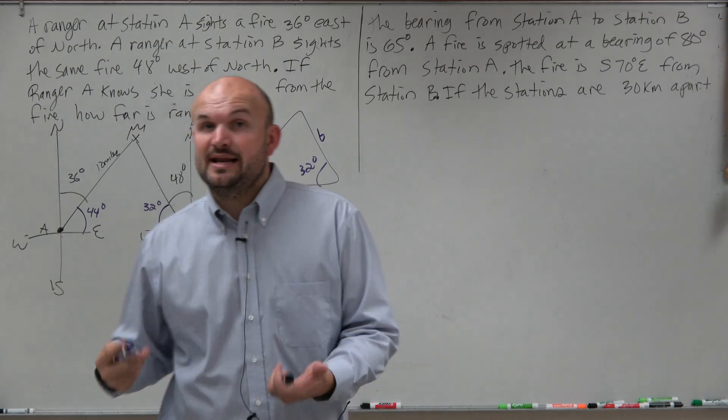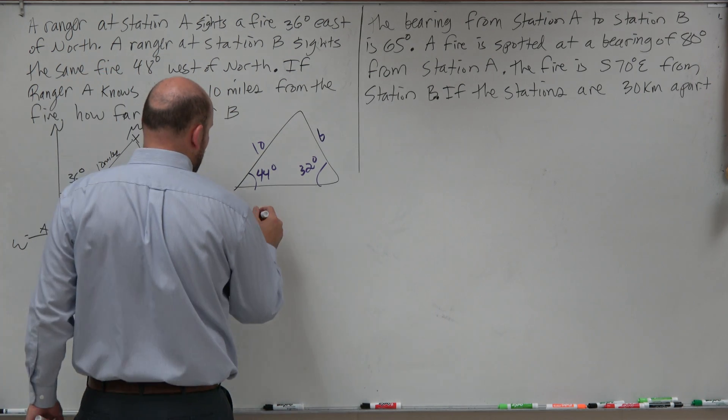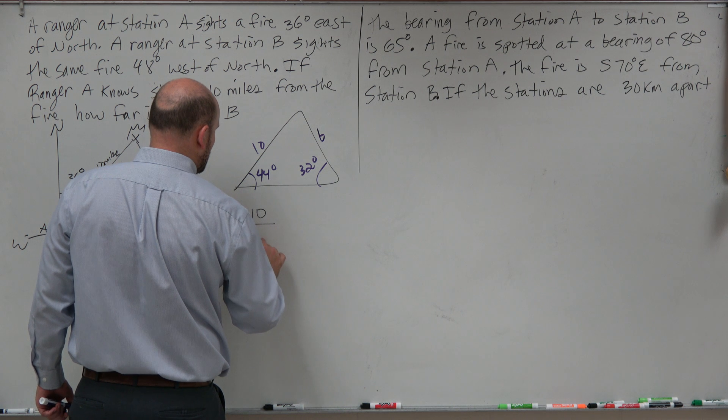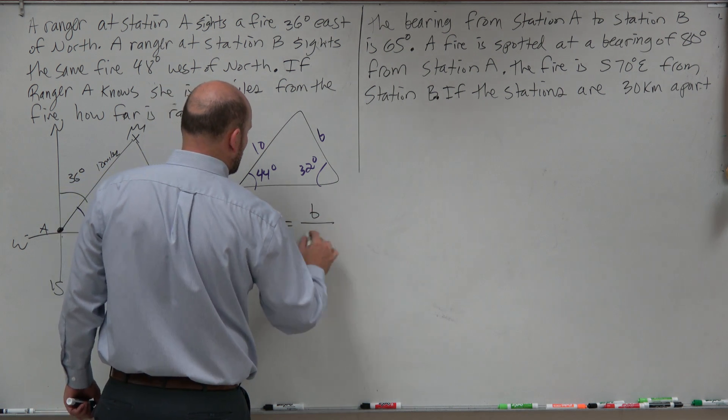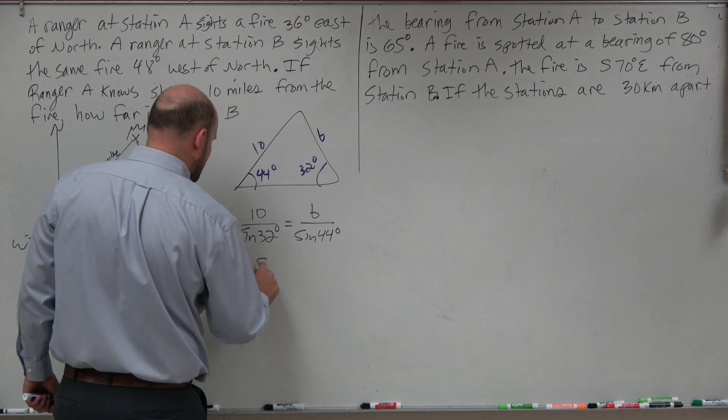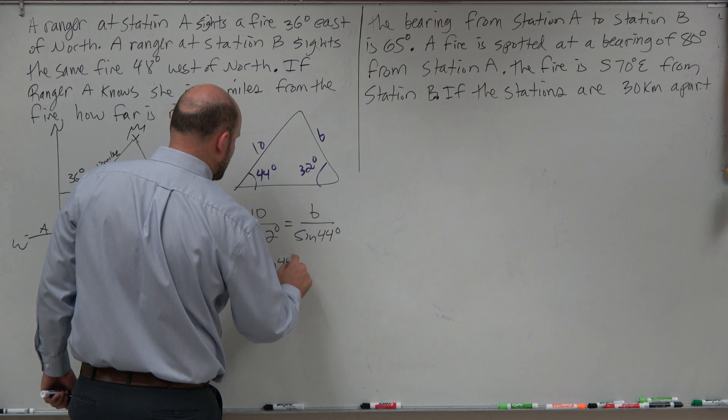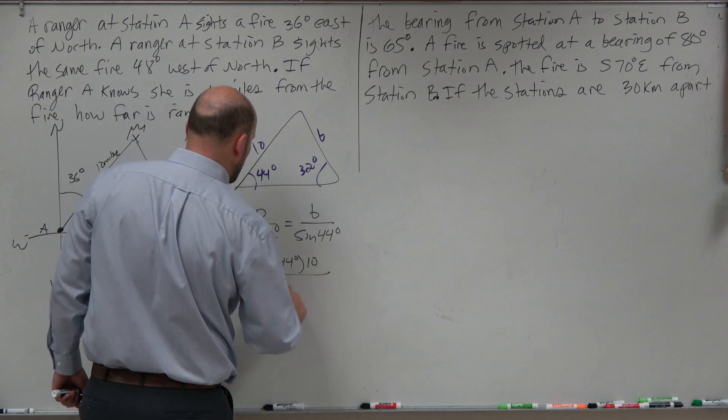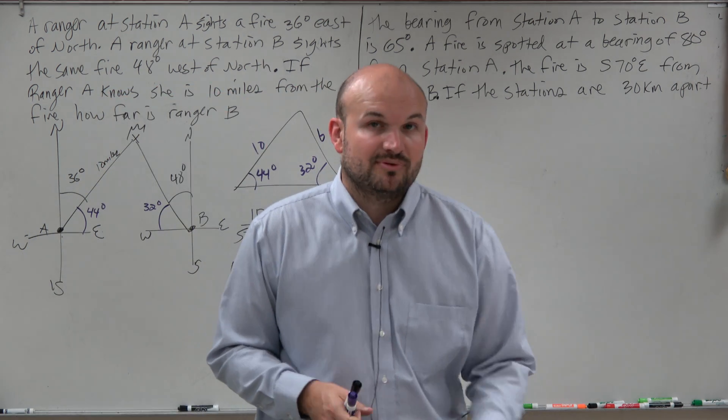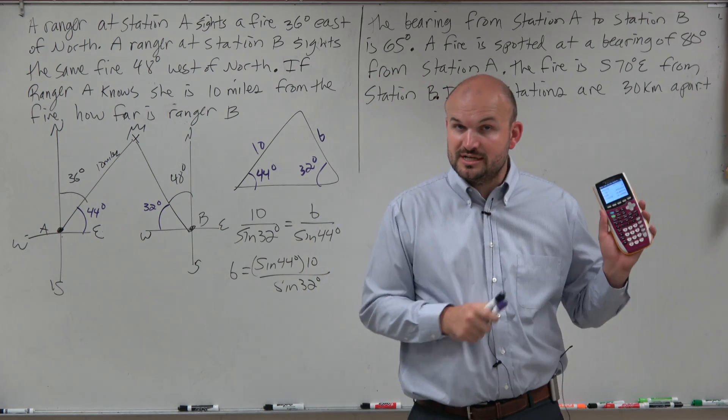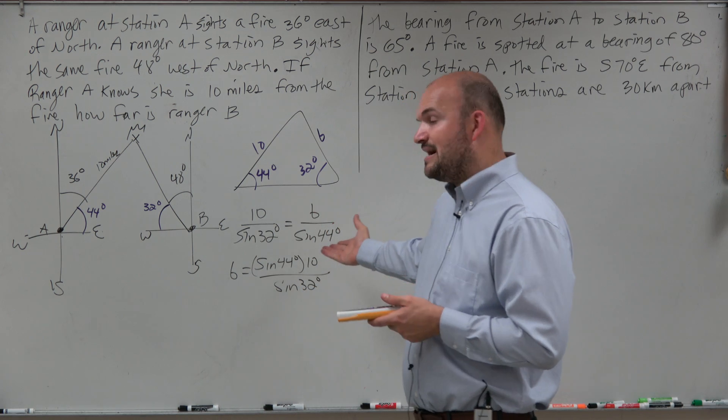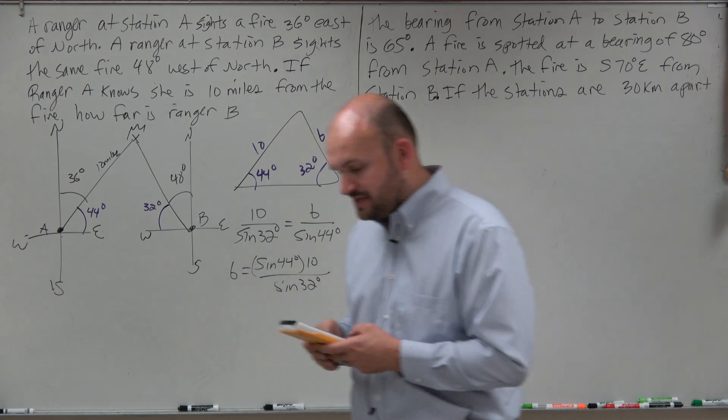Now we have enough information to set up our law of sines. We can basically say that 10 over sine of 32 degrees is equal to B over the sine of 44 degrees. Therefore, B is approximately sine of 44 degrees times 10 over the sine of 32 degrees. Make sure when you type this in your calculator that your calculator is in degree mode.